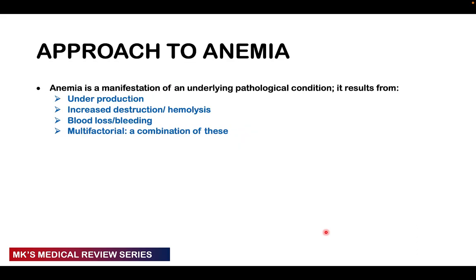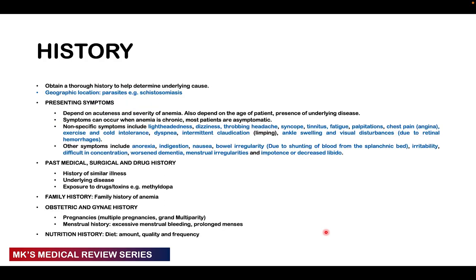Anemia results from underproduction, increased destruction (hemolysis), blood loss, or a combination of the three. In taking history, we want to determine the cause. Geographic location is important — consider parasites like schistosomiasis and malaria. Presenting symptoms depend on the acuteness and severity of the condition, the age of the patient, how long they have had the anemia, and the presence of underlying diseases.